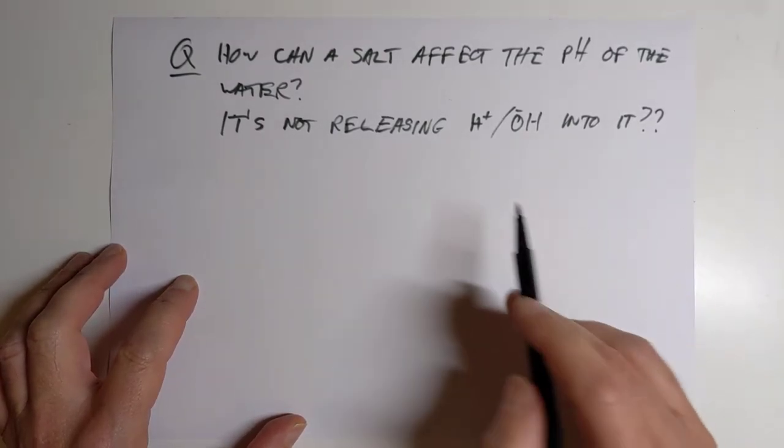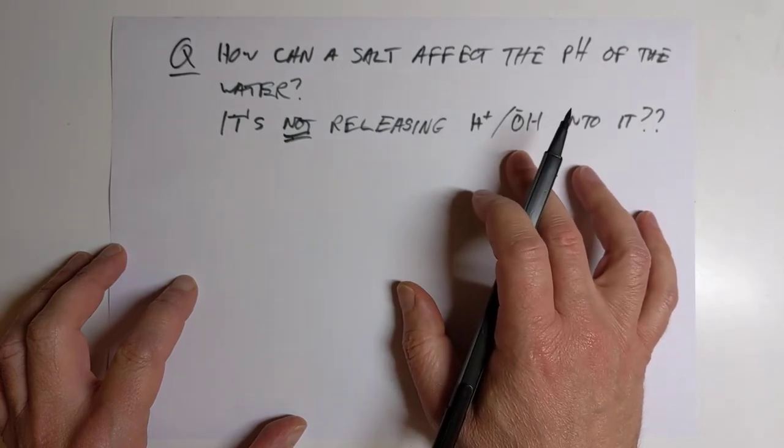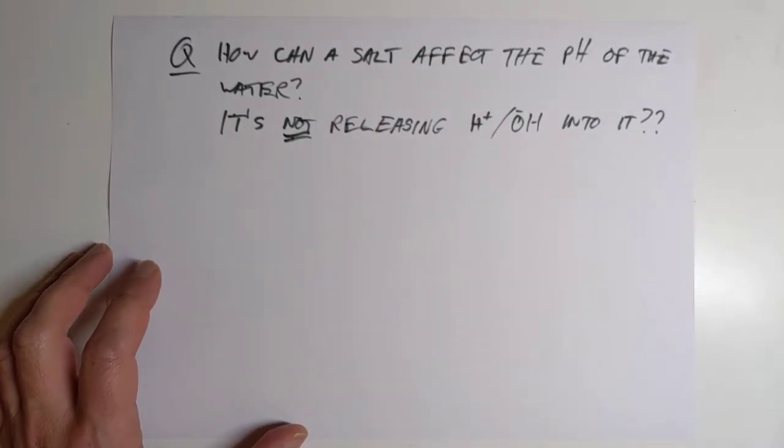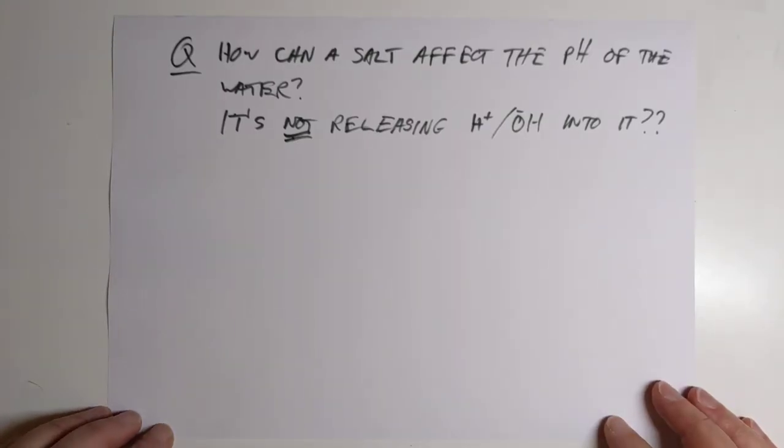How can a salt affect the pH of the water anyway? Because the salt does not, it doesn't release H+ or OH- into the water. However, so how can it change the pH in the first place? Let's have a look.